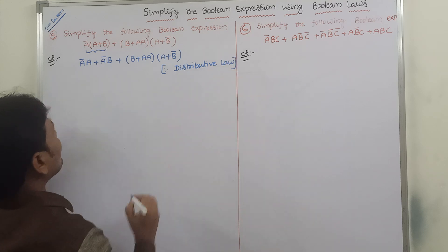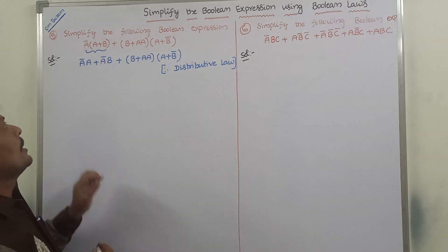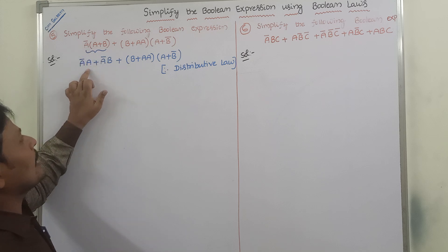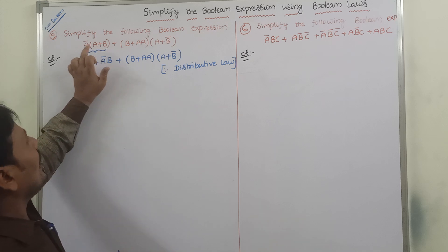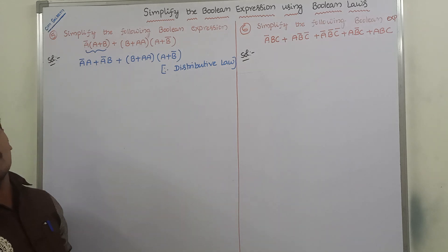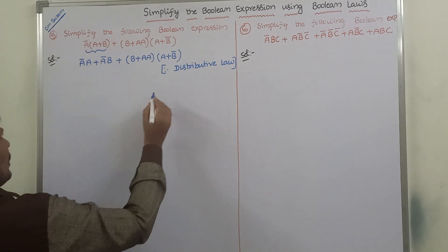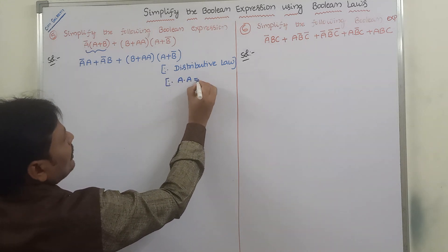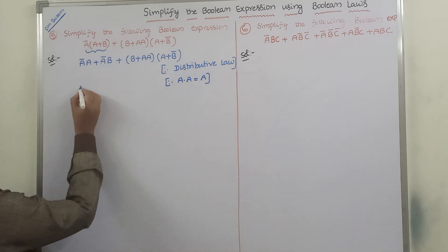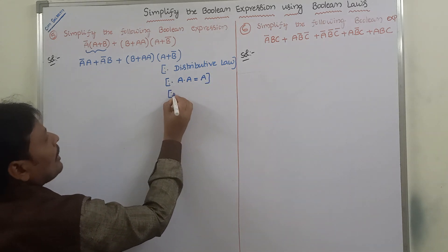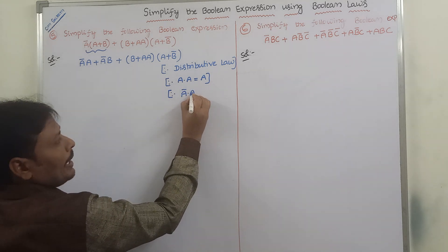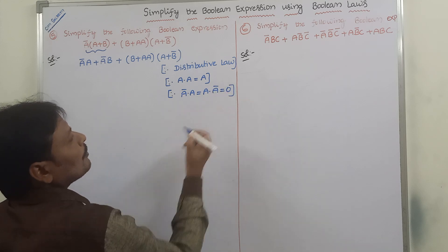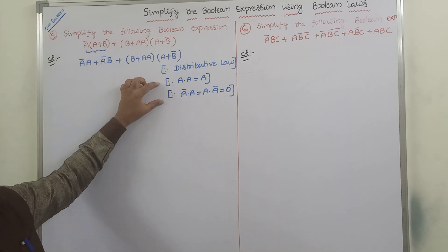What is the distributive law? A-bar into (A plus B): after applying the distributive law we get A-bar·A plus A-bar·B. Now we already know that A·A is equal to A, and another formula: A-bar·A equals A·A-bar equals 0. We already know these two formulas.